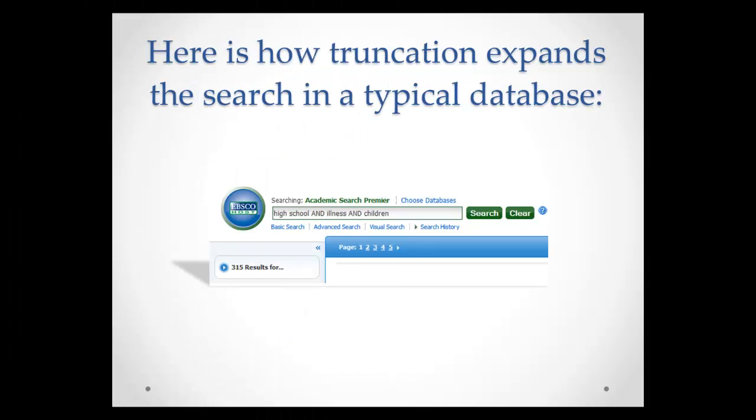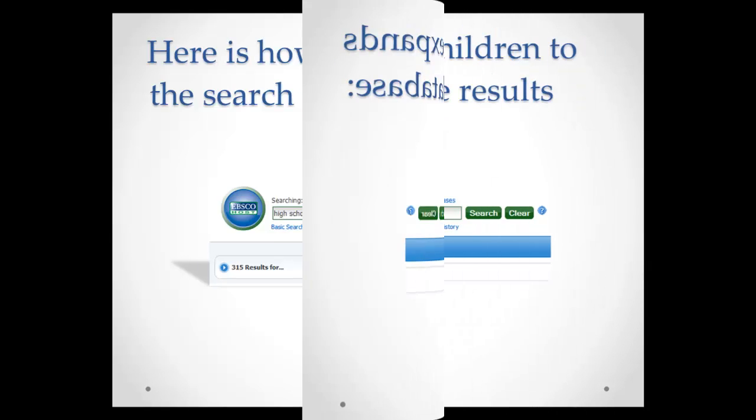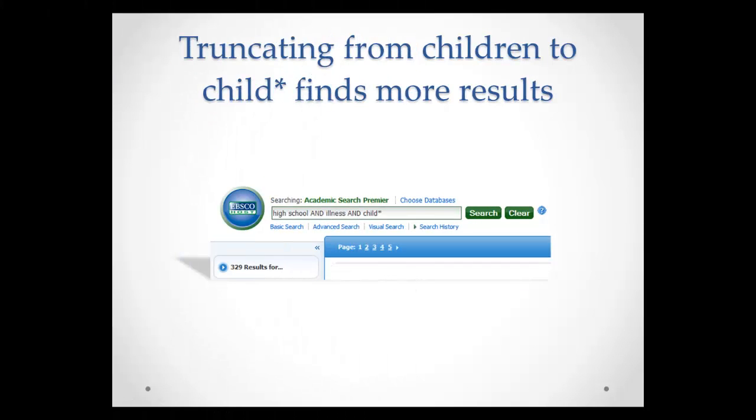Truncation will expand your search in a typical database. A search for high school and illness and children brings up 315 results. By truncating the word children and searching high school and illness and child asterisk, your results increase to 329.